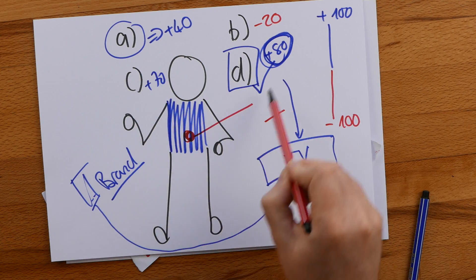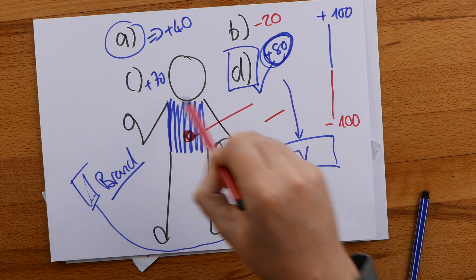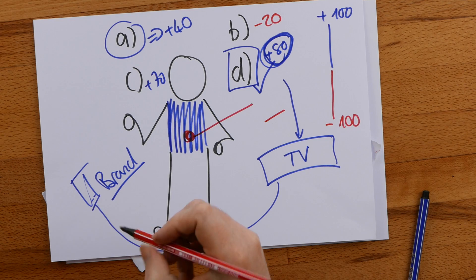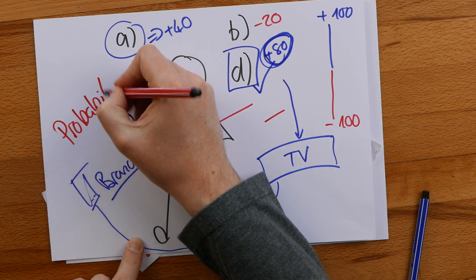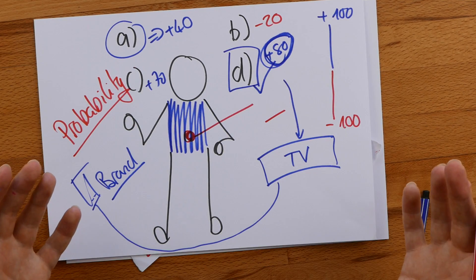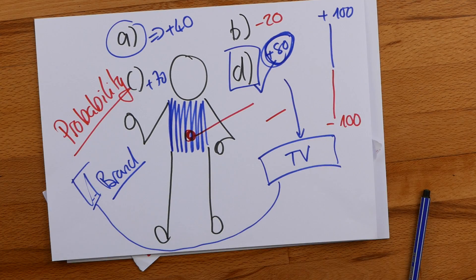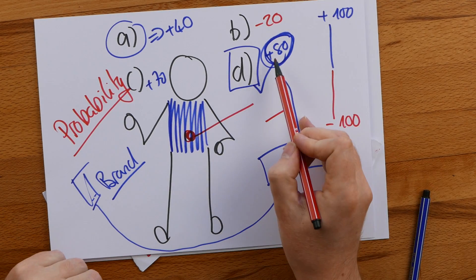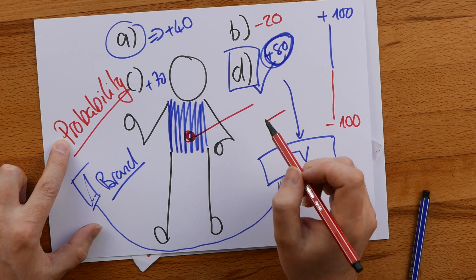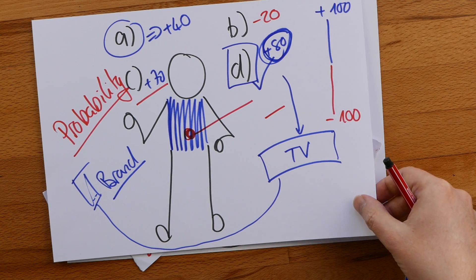So after the brain has calculated each of these different options according to the info it has there, it then however goes and has a look at experience with similar things and calculates finally the probability that this magnitude of reward will actually happen. Providing both anticipated reward and probability are high, that becomes the gut feeling. If however, our anticipated reward of 80 has a very low probability of actually really happening, then the brain would go for the second best option, which would be plus 70 option C.